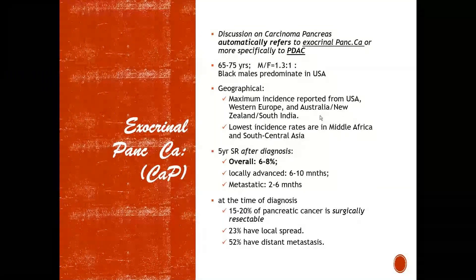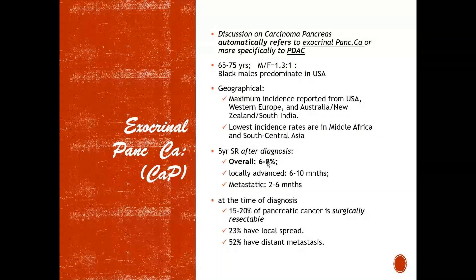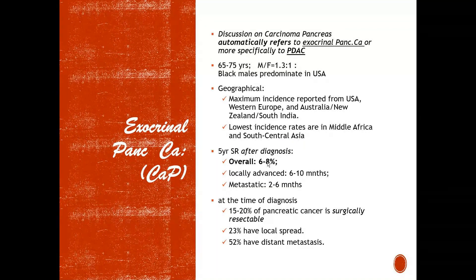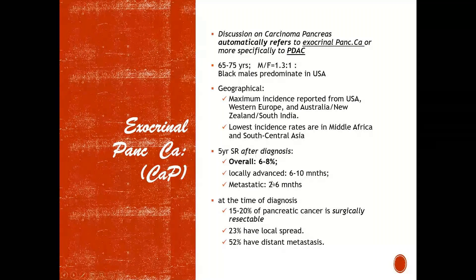The 5-year survival rate after diagnosis is an important figure — overall it is only 6-8%, making it a very poor prognosis cancer. For locally advanced pancreatic cancer, the average lifespan is only 6-10 months, and for metastatic disease, the patient has only 2-6 months to live.